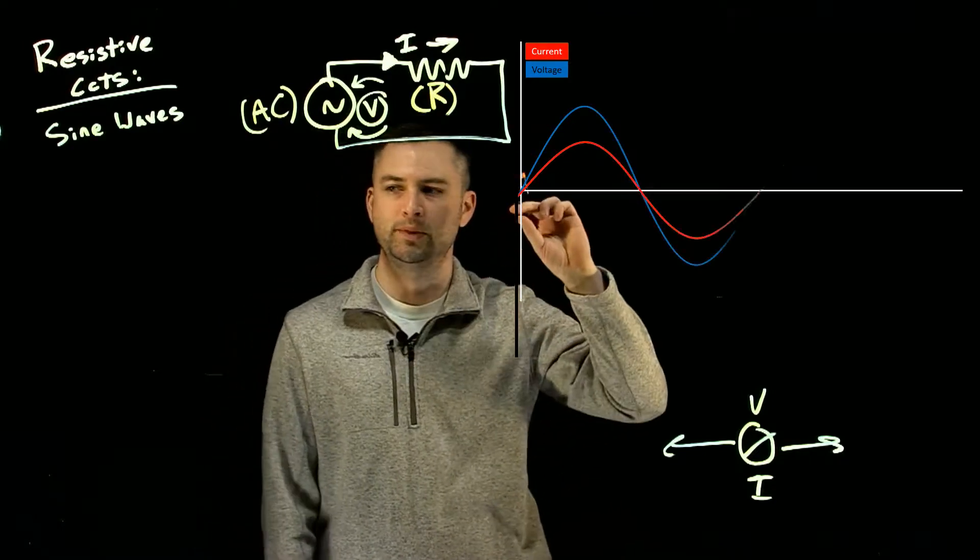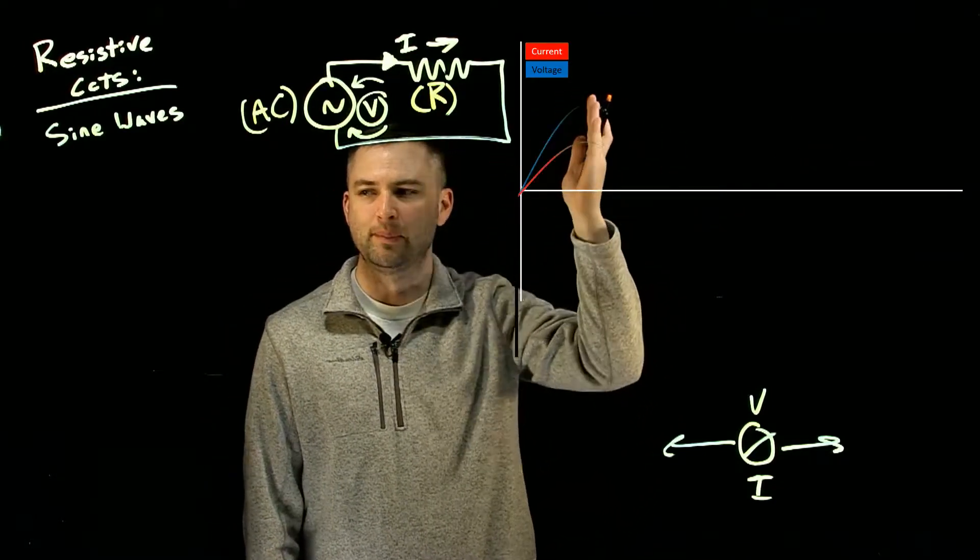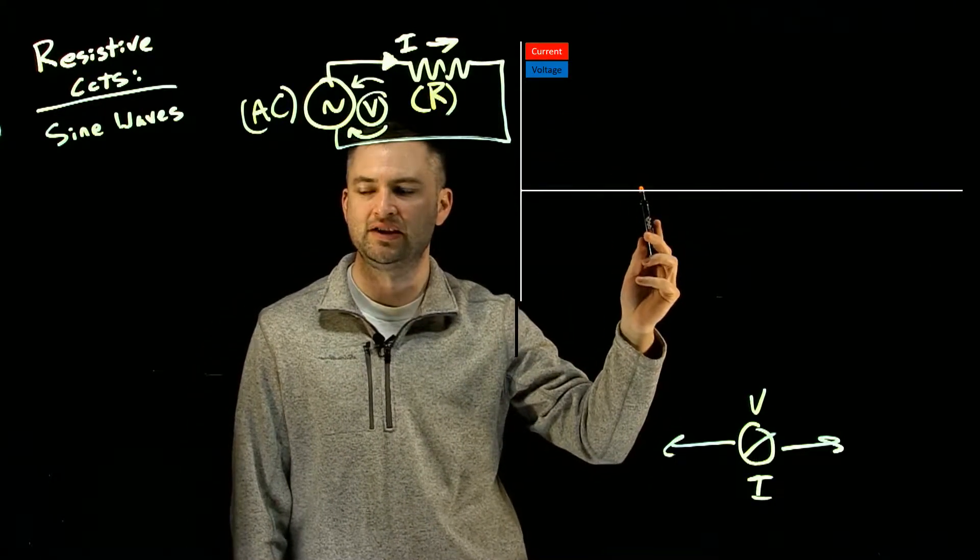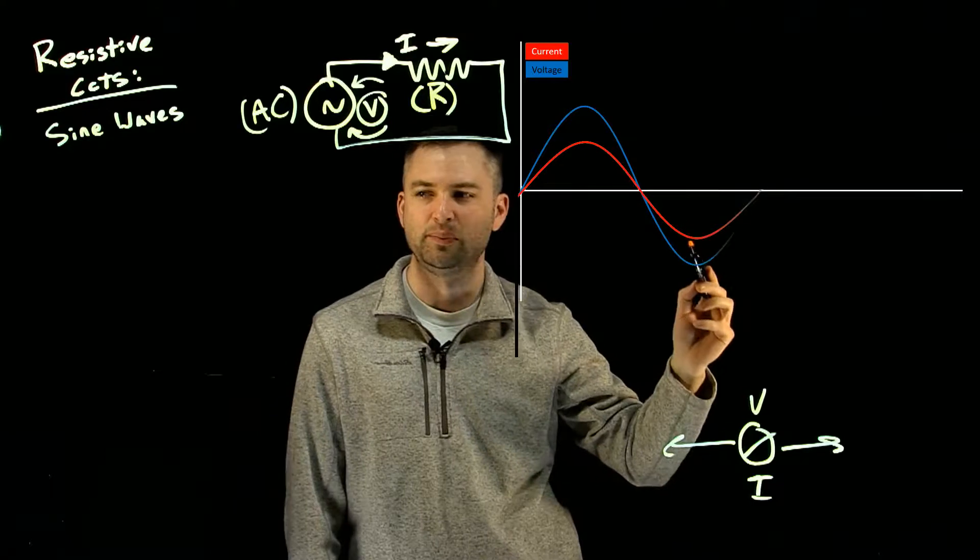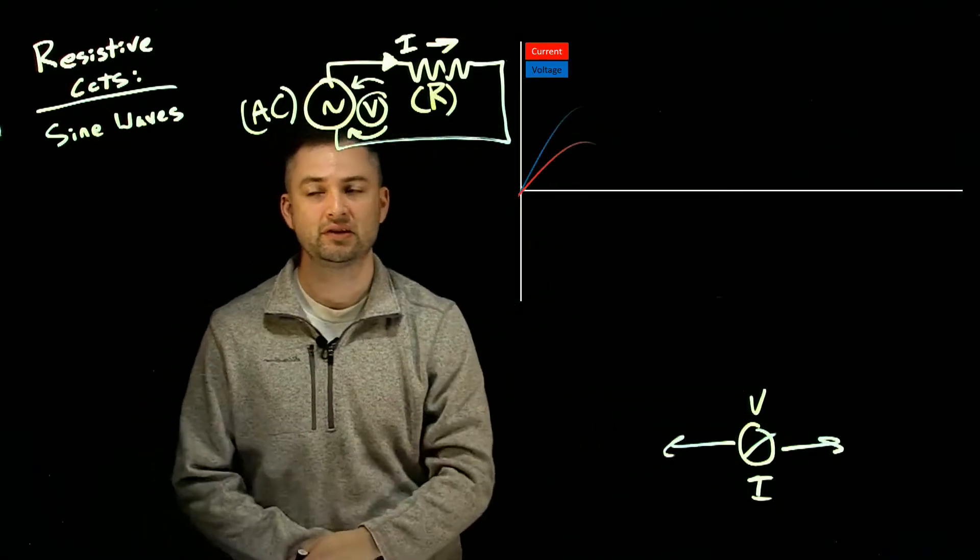We can see both sine waves have started at the same point. Both sine waves are peaking at the same point, crossing the center line at 180 degrees. And then once again, they're peaking on the negative alternation. And then they meet up again at 360 degrees.